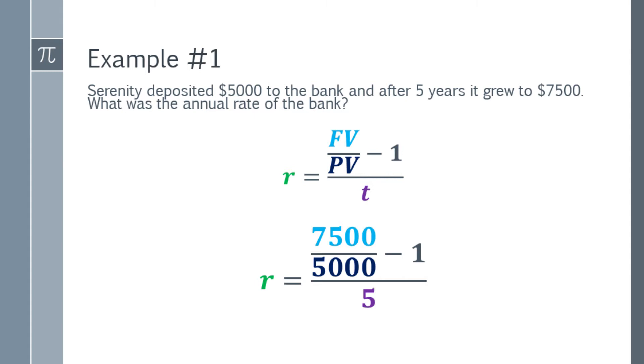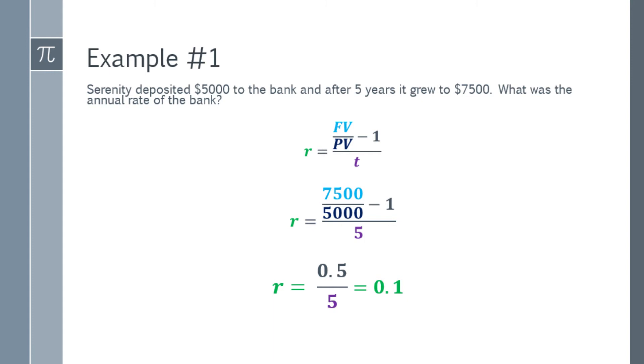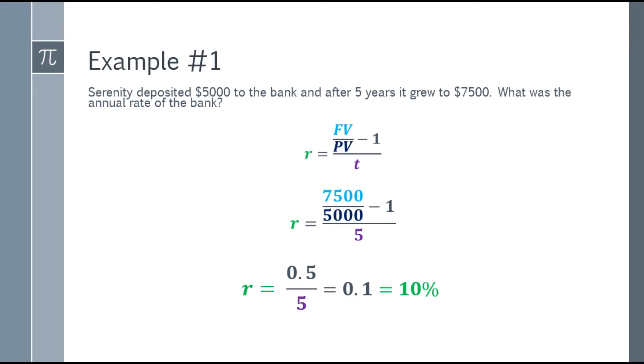Let's simplify it further. $7,500 over $5,000, we divide that, and the answer minus 1 will be 0.5. Next, 0.5 divided by 5 will be 0.1. So 0.1 is the decimal form. Again, for rate, we have to change it to percent sign. We multiply it by 100, then add the percent sign. 0.1 times 100 will be 10, and add the percent sign, you have 10%.